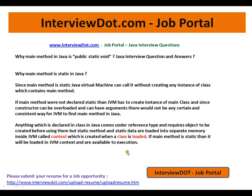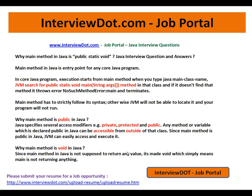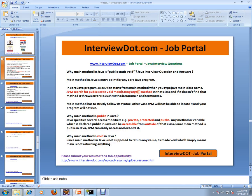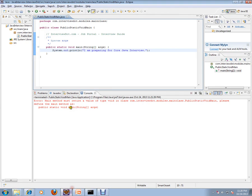So those are the reasons for making the main method public static void. Let's see an example so you can understand.